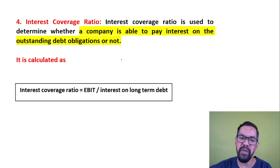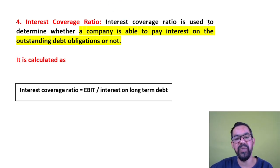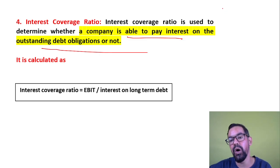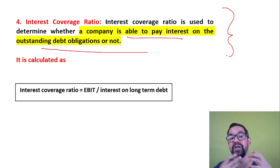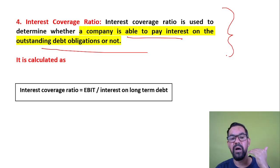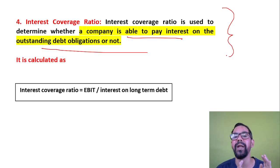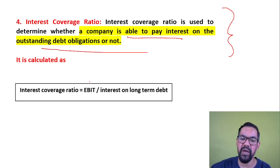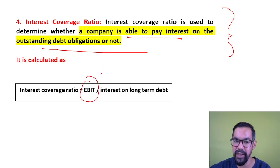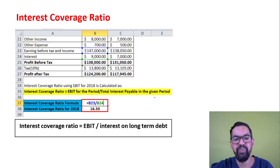The final ratio under solvency is the interest coverage ratio. The interest coverage ratio is used to determine whether a company is able to pay interest on its outstanding debt obligations. If there is an organization raising funds from the market and you as an investor want to check whether this company is able to pay out interest for the upcoming 10 years, the interest coverage ratio will help you. The formula is: earnings before income taxes divided by interest on long-term debt obligations.